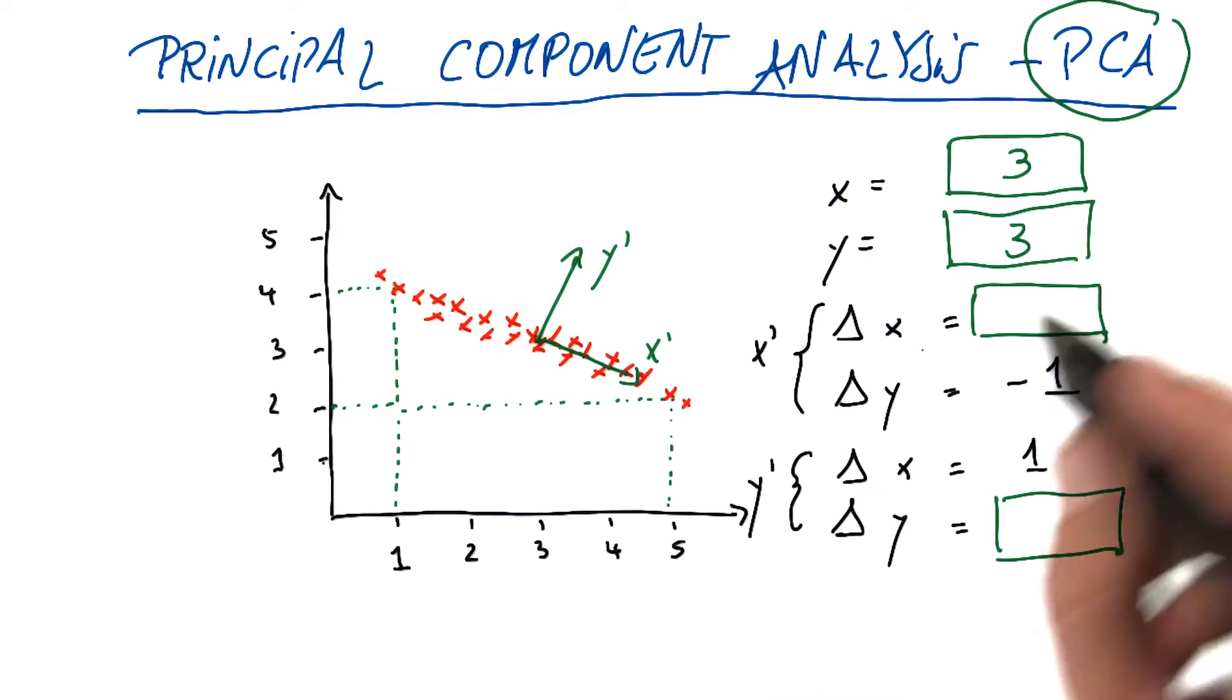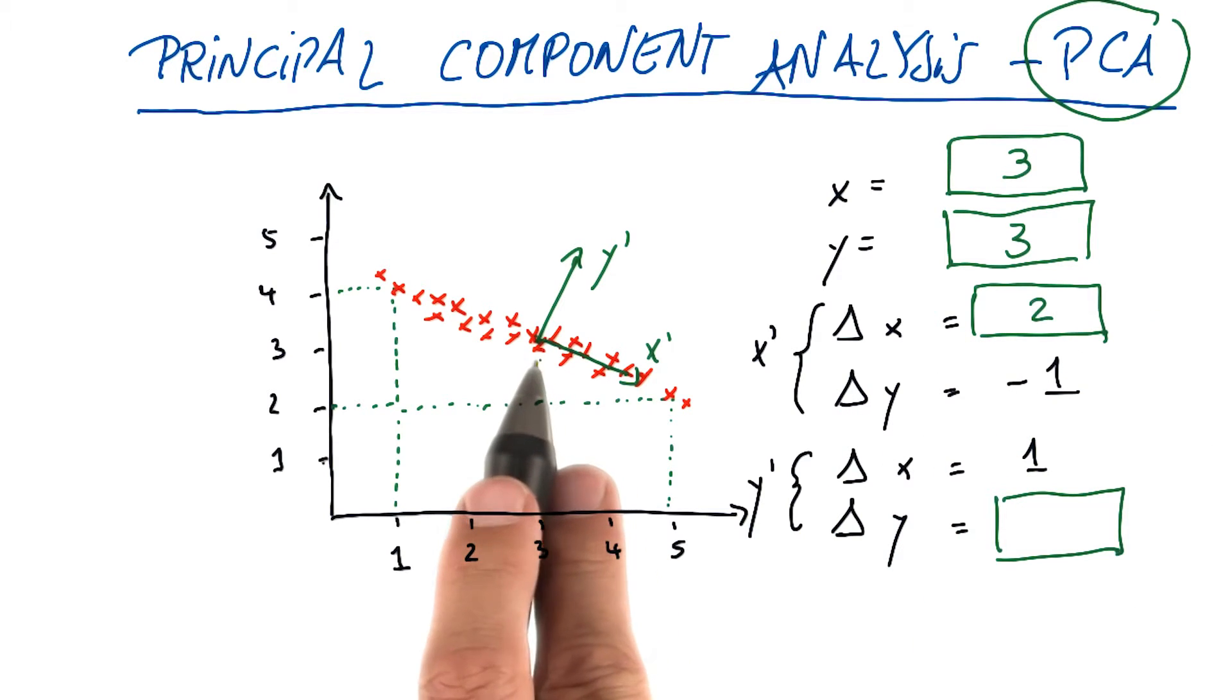And I would argue delta x is 2, so if we go down here on this axis, 1 down in the y direction, then we go 2 to the right.